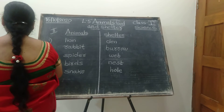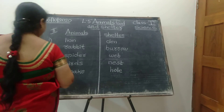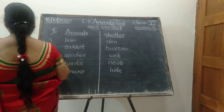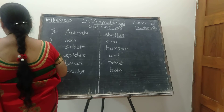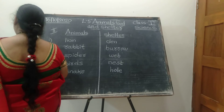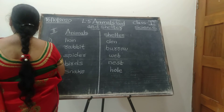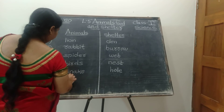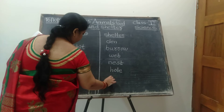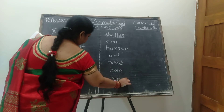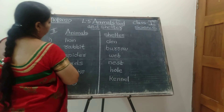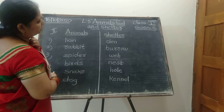Next one, sixth one — you can write the name of the animals. Dog — kennel. Seventh one — and with this I will continue tomorrow. We will continue with animals and shelter.